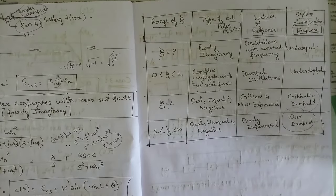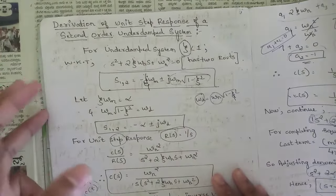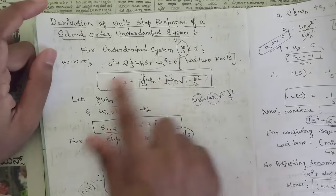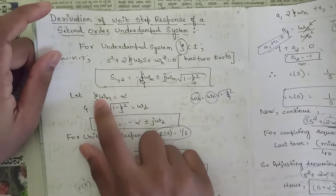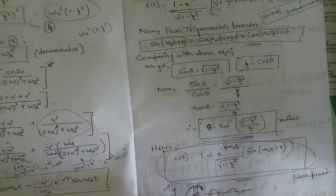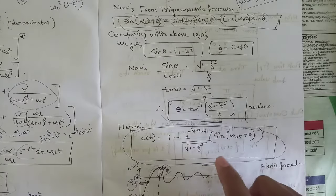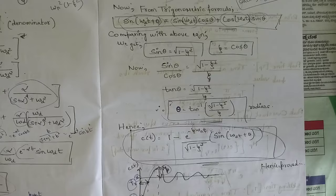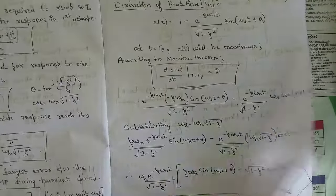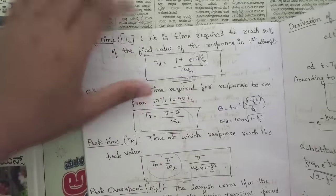We derived the unit step response of the second order under-damped system (ζ < 1), substituting α = ζωₙ and ωd = ωₙ√(1 − ζ²). The resulting output response is: c(t) = 1 − [e^(−ζωₙt) / √(1 − ζ²)] · sin(ωdt + θ). Using this expression, equations for peak time, peak overshoot, rise time, and settling time were derived.